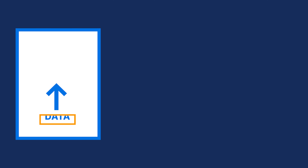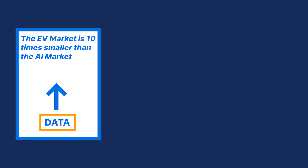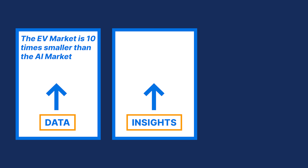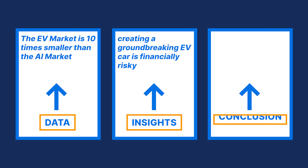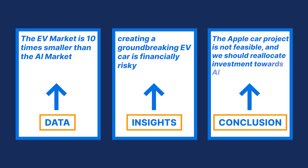Tactic number four: use the pyramid principle. As human beings, we think by default in a linear fashion. First, here's the data — the EV market is 10 times smaller than the AI market. Second, here are the insights — creating a groundbreaking EV car is financially risky. And finally, here's the conclusion — the Apple car project is not feasible, and we should relocate investment towards AI.